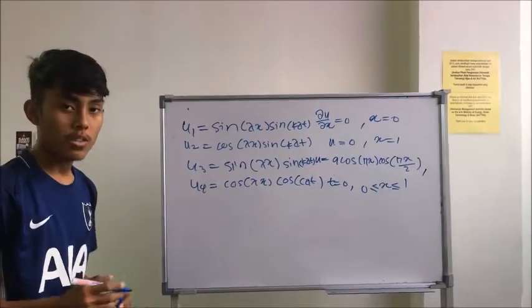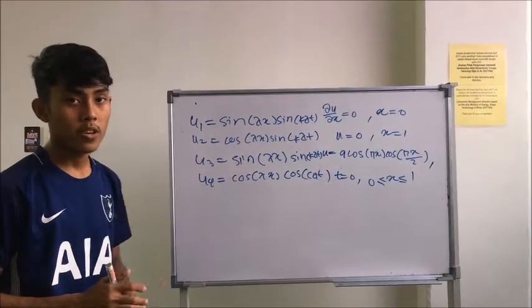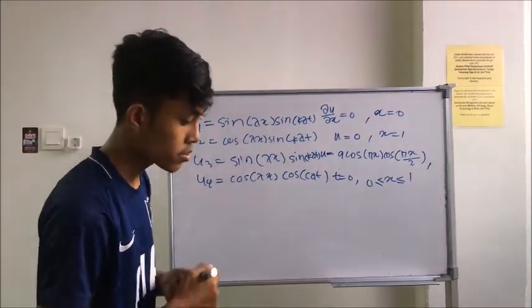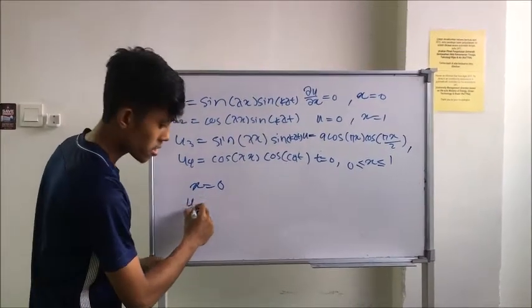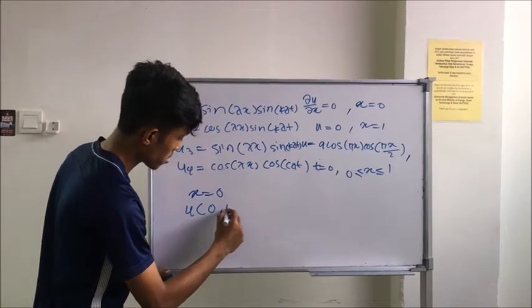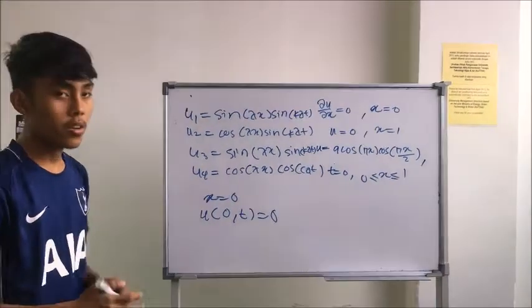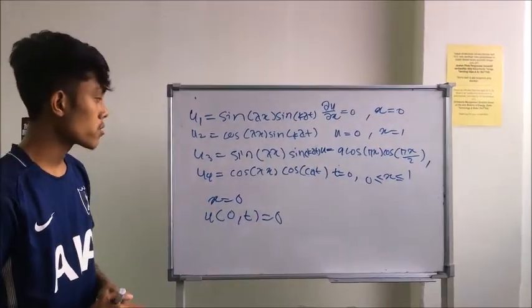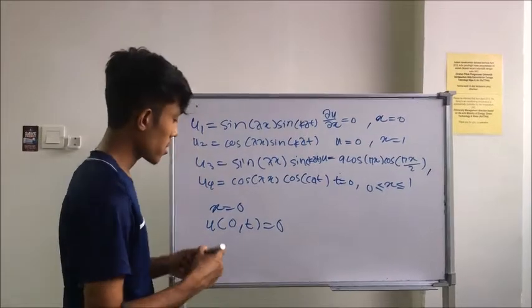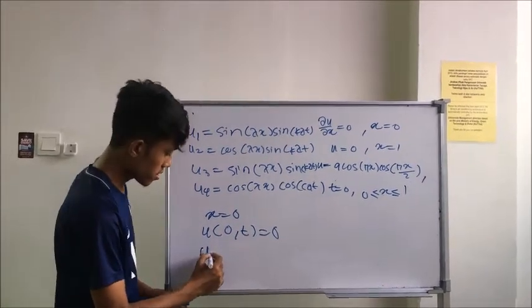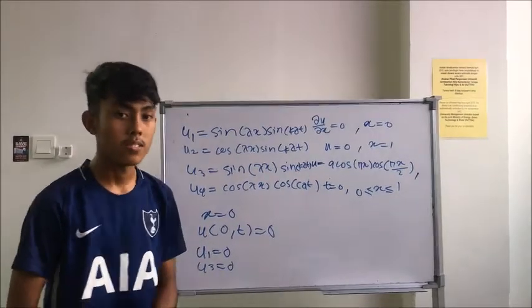So this is our four possible solutions. So in order to know which satisfies the equation, we need to substitute the value when x is equal to zero. So after substituting the value of x equal to zero, we will obtain only two equations which are u1 and u3 equal to zero. So I will pass my information to my friends. Thank you.